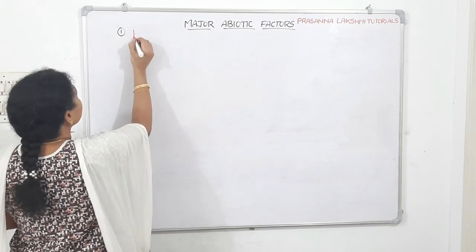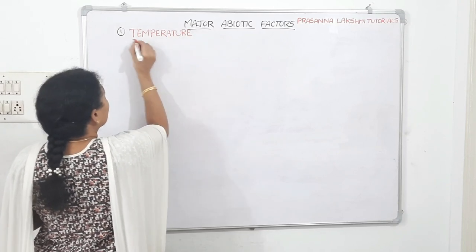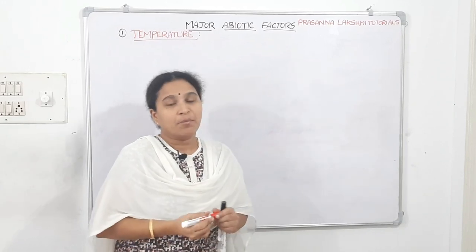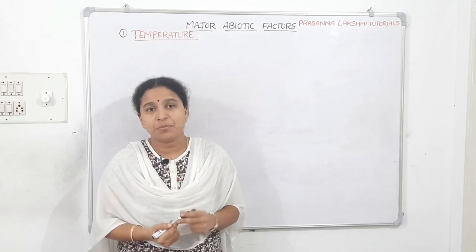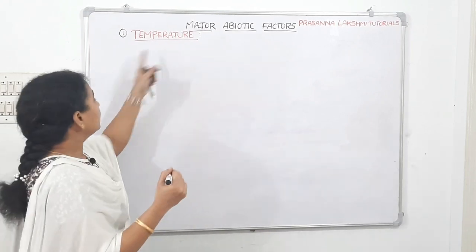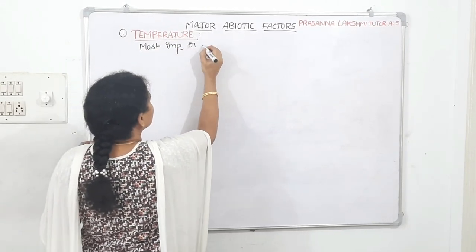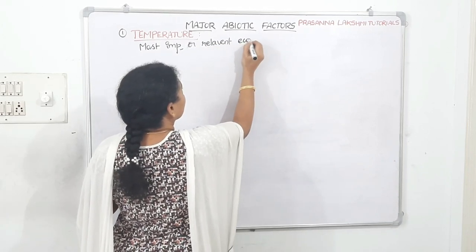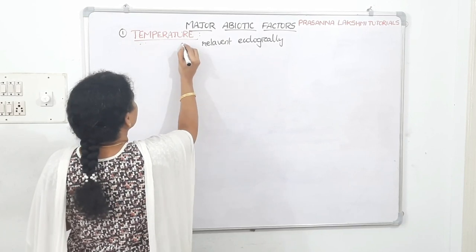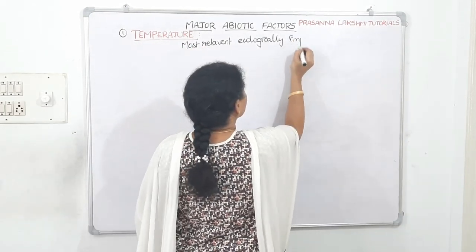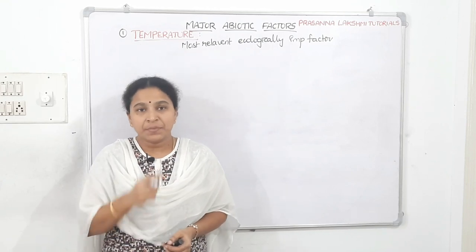Among the abiotic factors, one of the most important ecologically relevant factors which affects the growth of organisms in a population is temperature. That is why we are starting with this topic. Temperature is the most relevant ecologically important factor which affects the growth of organisms and population.